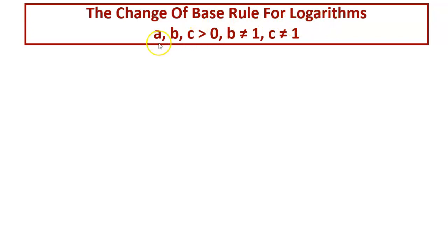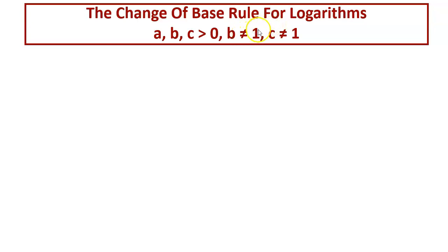A, B, C — what are these? We will be knowing about them very soon. They are positive numbers and B is not equal to 1, C is not equal to 1. Along with the rule and its proof, we will also be solving two challenging questions which will be needing this change of base rule to get solved in this session.